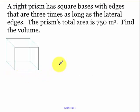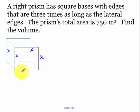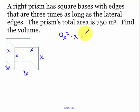Example 2: A right prism has square bases with edges that are 3 times as long as its lateral edges. The prism's total surface area is 750 square meters. Find its volume. Let each lateral edge equal x, so the base edge is 3x, and the base area is 9x².